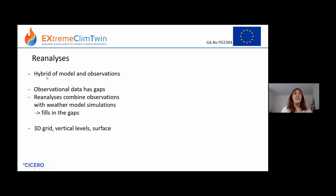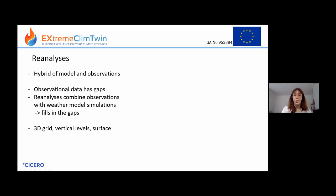Reanalyses are a hybrid between models and observations. Observational data has gaps, and reanalyses combine observations with weather models to fill in the gaps. We end up with a 3D dataset — data in the vertical as well as on the surface — which is like a complete 3D dataset that would not be achievable only with observations.